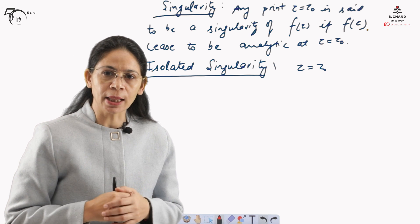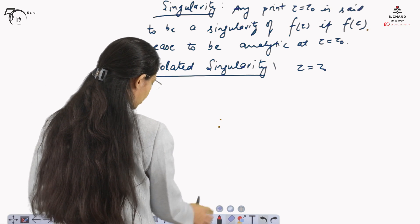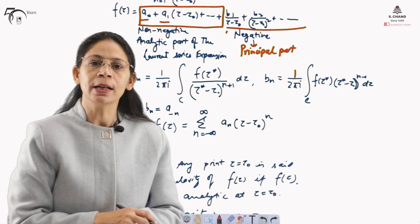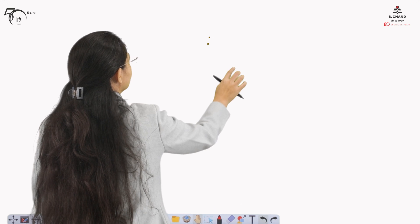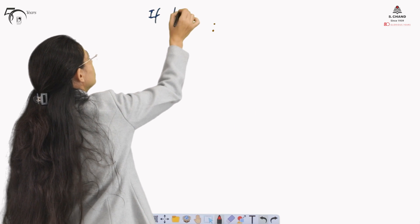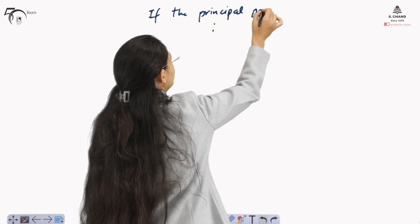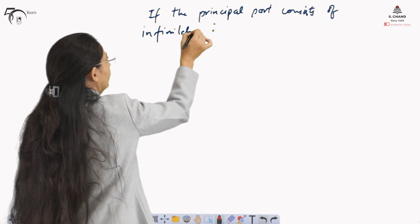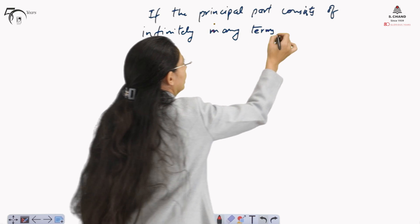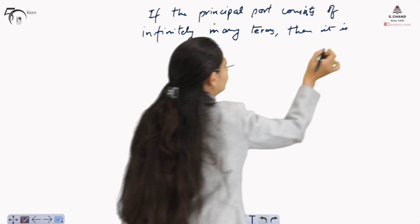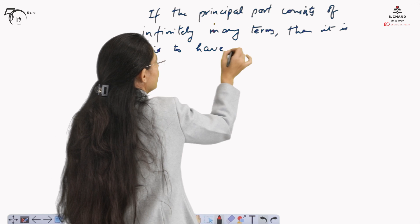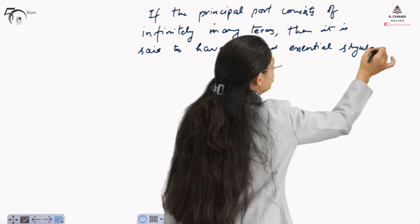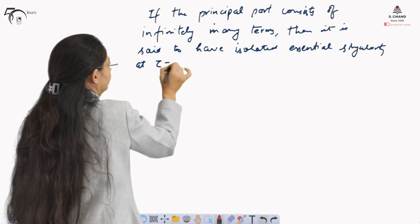When it is an isolated singularity, the next step is to determine if it is an isolated essential singularity, which we can find using the Laurent series expansion. If the principal part of the Laurent series expansion consists of infinitely many terms, then f(z) is said to have an isolated essential singularity at z equals to z naught.